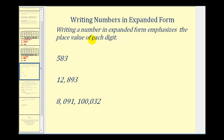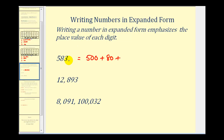Sometimes you'll be asked to write numbers in expanded form. Writing a number in expanded form is a way to emphasize the place value of each digit. For example, this five represents five hundred, this eight represents eight tens or eighty, and this three represents three ones or three. This is the expanded form of five hundred eighty-three.